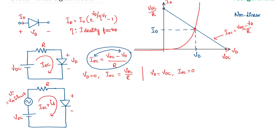So the current that flows is IDC plus some small id indicating the AC current flow, and the voltage across the diode would be some voltage corresponding to the DC plus a small voltage corresponding to the AC signal. This can be assumed only if the signal Vm is small. Because of this small AC signal applied on top of the DC signal, there will be a small change in voltage and correspondingly a current change.